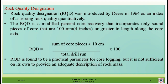divided by total drill run, multiplied by 100. RQD is found to be a practical parameter for core logging, but it is not sufficient on its own to provide an adequate description of rock mass.